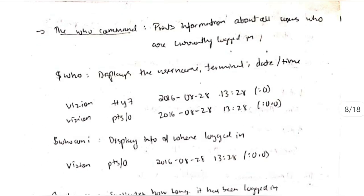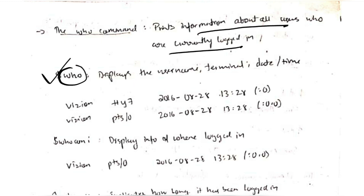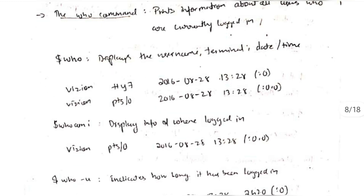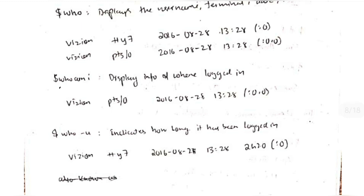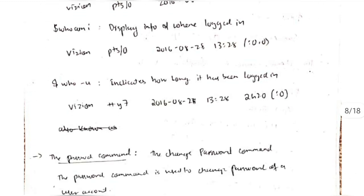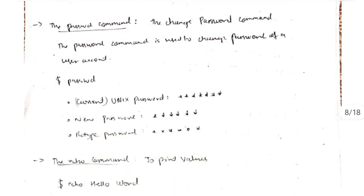The 'who' command prints the information of all the users who are currently logged in. If you write 'who', it will print who are all logged in along with the time. There are some specifications to it, like 'who am I' — it will display from where you logged in. And 'who -u' will display how long you have been logged in on the system.